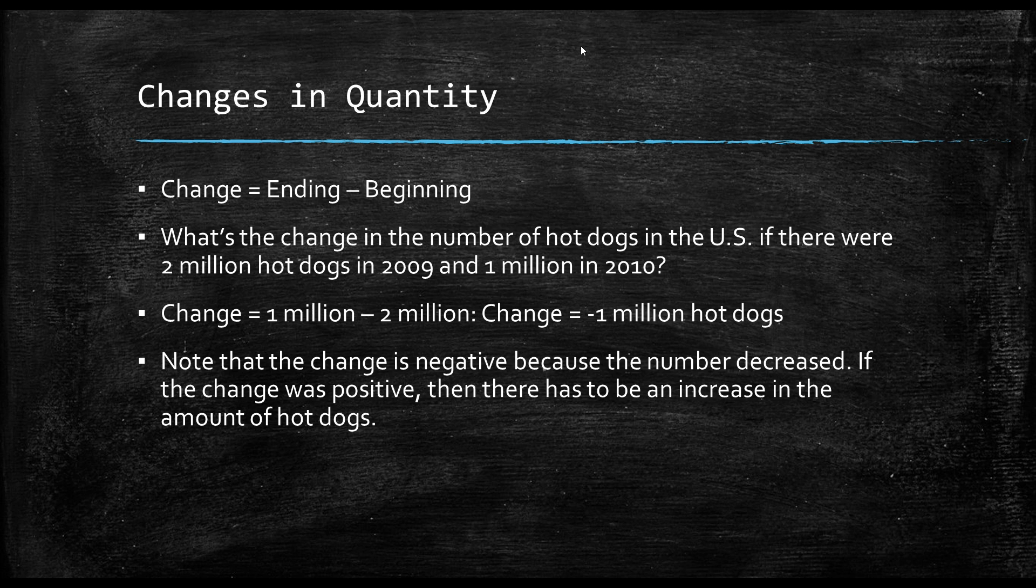So, the change is equal to the ending, which is 1 million, and minus the initial, 2 million. And so, the change is equal to negative 1 million hot dogs.